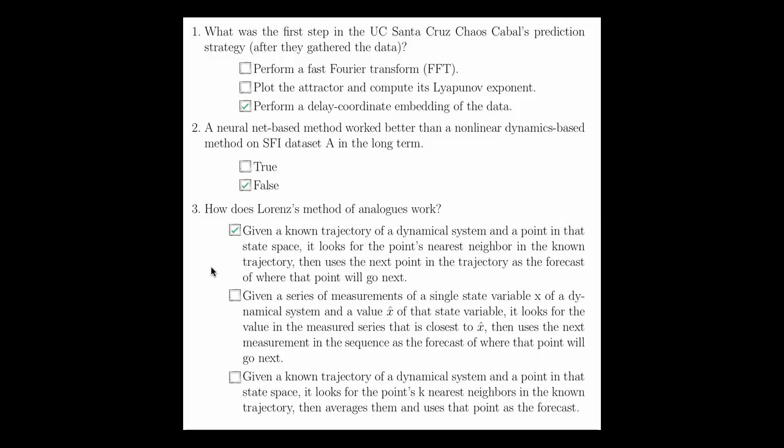The third answer is a simple modification of Loren's method of analogues using k-nearest neighbors. However, the original Loren's method of analogues used one neighbor. So the first answer is correct.